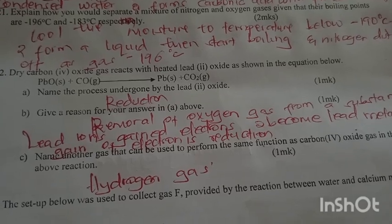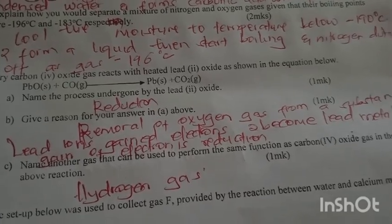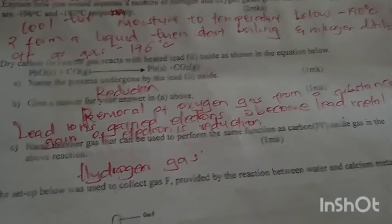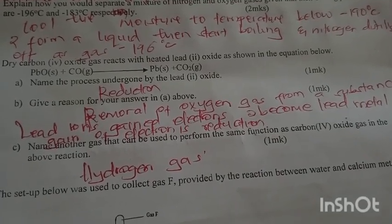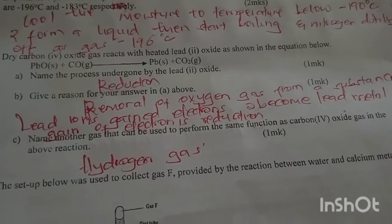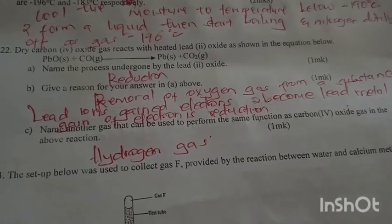Explain how you would separate a mixture of nitrogen and oxygen gases given their boiling points are negative 196 and negative 183. You cool the mixture to temperature below negative 190 degrees Celsius to form a liquid, then you start boiling. Nitrogen distills off at negative 196 degrees Celsius.